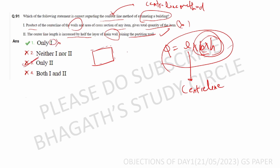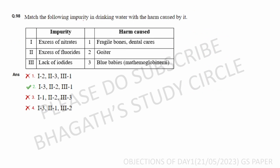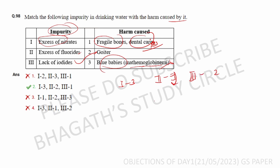Next question: match the following impurity in drinking water with the harm caused. Excess of nitrate causes methemoglobinemia. Excess of fluoride causes fragile bones — actually dental caries. Lack of iodide causes goiter. So the correct matching order is two, one, three — making option four the correct answer.